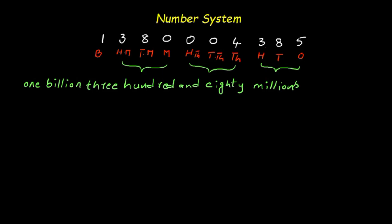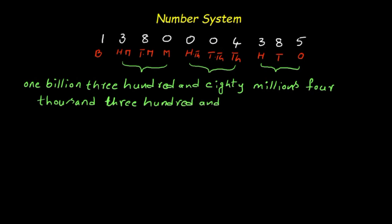There is 4 in the thousands place, so that is 4000. And the last part is 385. So the full number is 1 billion, 380 million, 4385.